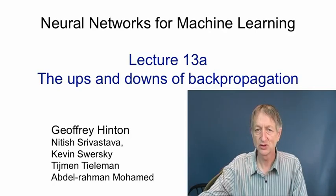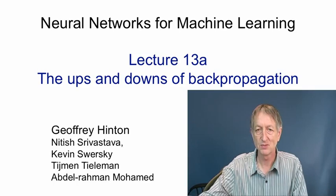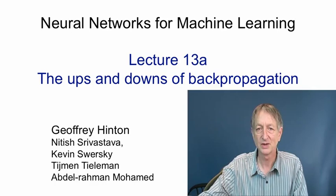In this video, I'm going to talk about the history of backpropagation. I'll start with where it came from in the 70s and 80s, and then I'll talk about why it failed in the 90s — why serious machine learning researchers abandoned it. There was a popular view of why this happened, and we can now see that that popular view was largely wrong. The real reasons it was abandoned were because computers were too slow and data sets were too small. I'll conclude by showing you a historical document — a bet made between two machine learning researchers in 1995. It's interesting to see what people back then believed and how wrong they were.